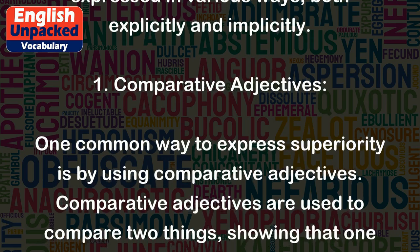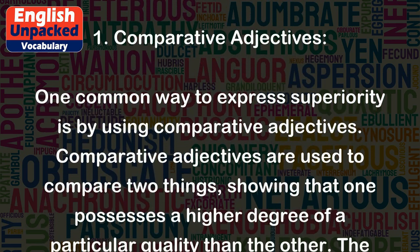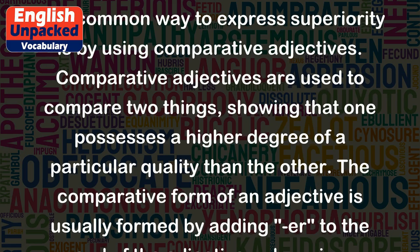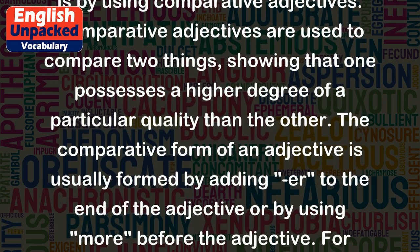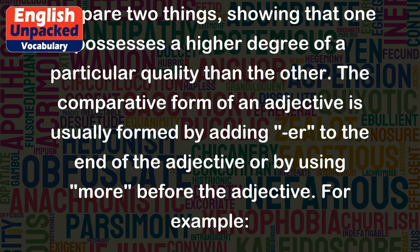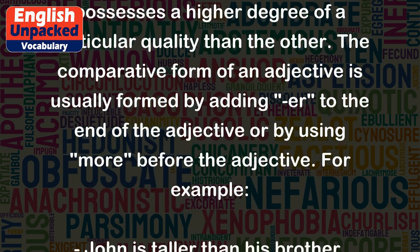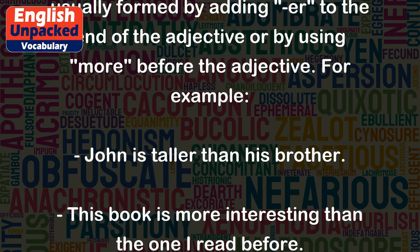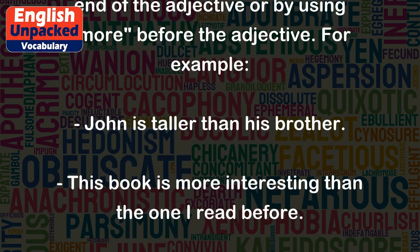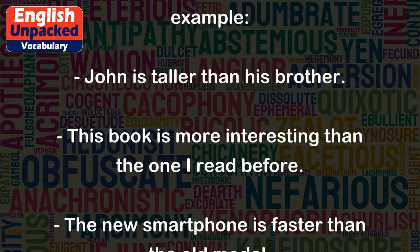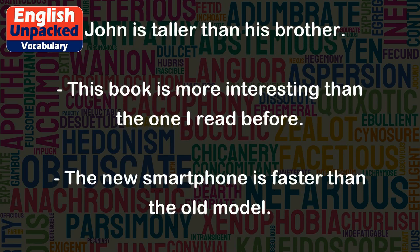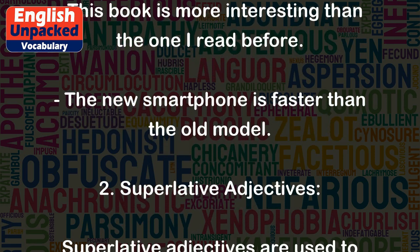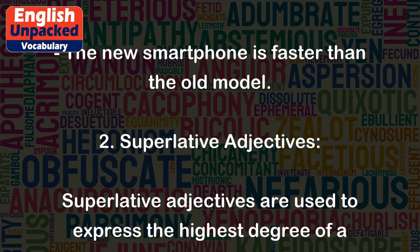1. Comparative Adjectives. One common way to express superiority is by using comparative adjectives. Comparative adjectives are used to compare two things, showing that one possesses a higher degree of a particular quality than the other. The comparative form of an adjective is usually formed by adding -er to the end of the adjective or by using 'more' before the adjective. For example: John is taller than his brother. This book is more interesting than the one I read before. The new smartphone is faster than the old model.